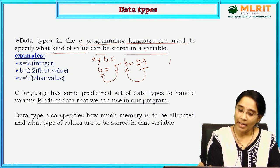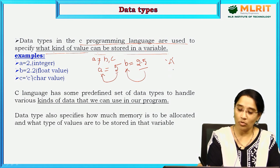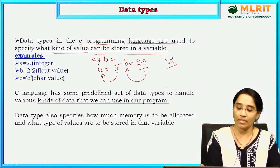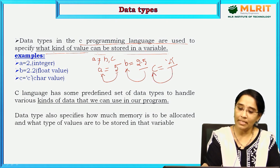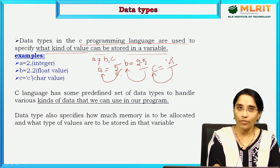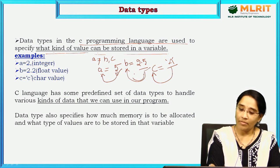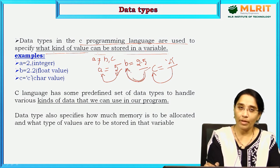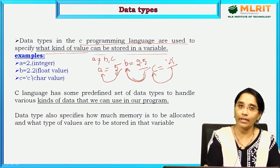If I want to store any character — characters are always represented in single quotes. Certainly I will allocate this data to a variable C. So here, 5 is of type integer. 2.5 is a floating value which is of type float, allocated to variable B. A is a character type data that is allocated to variable C.